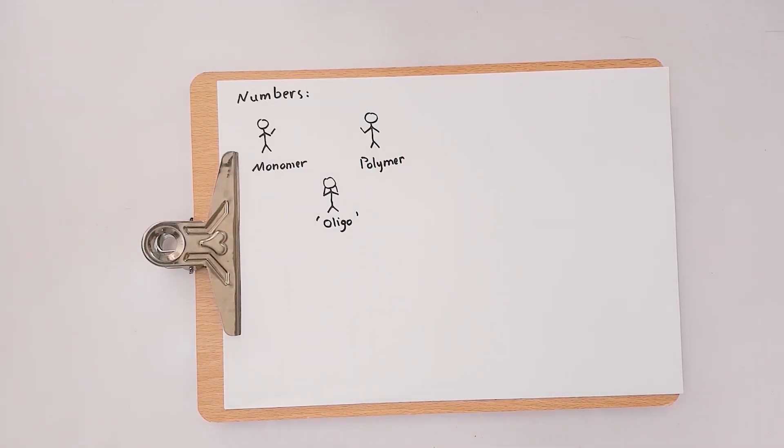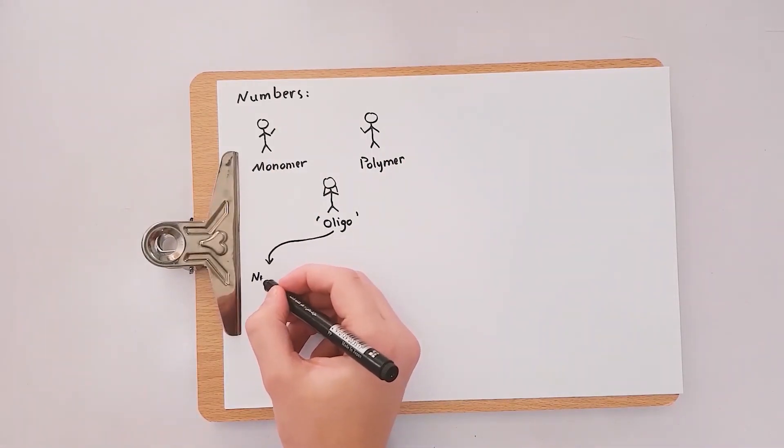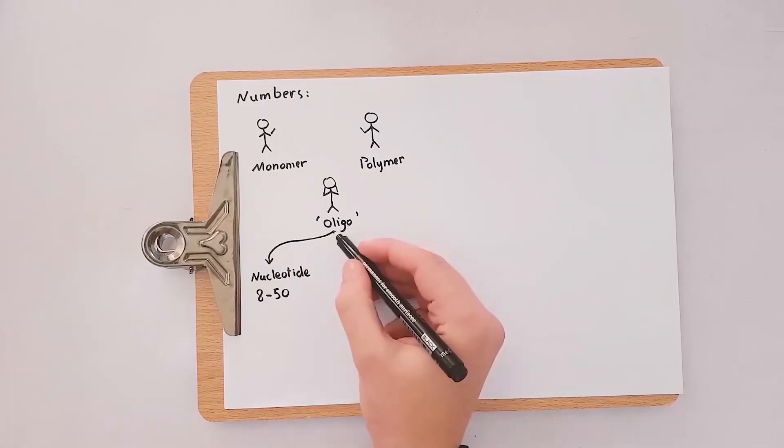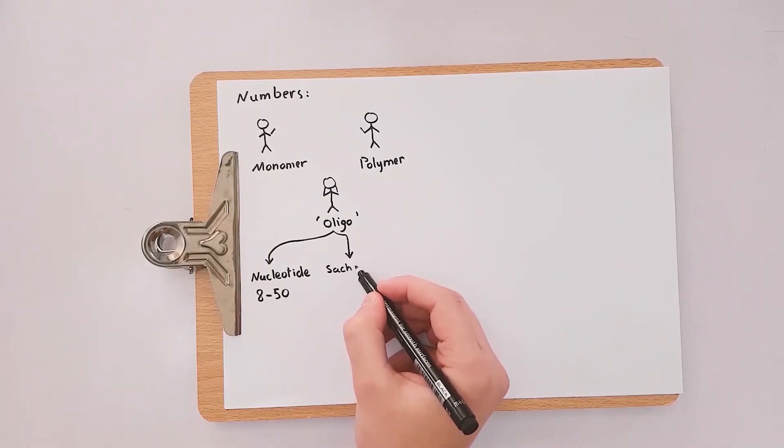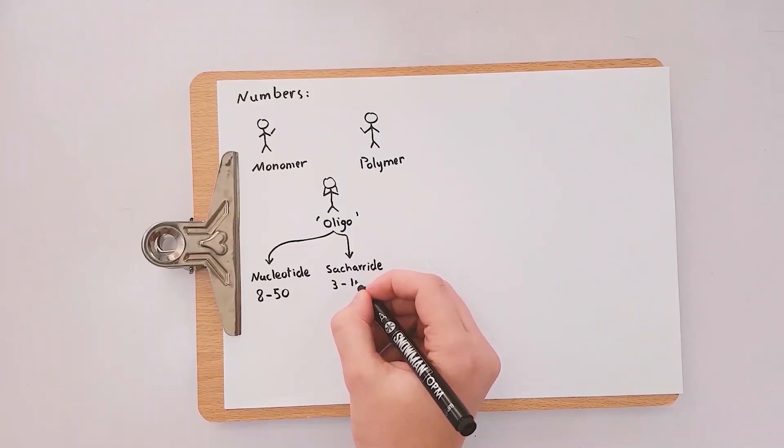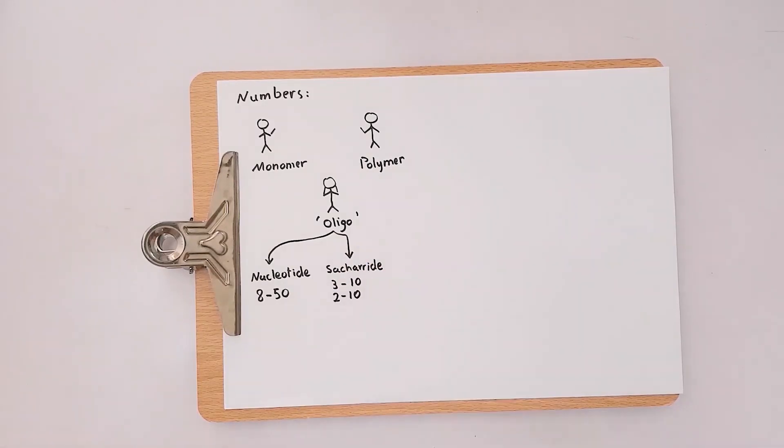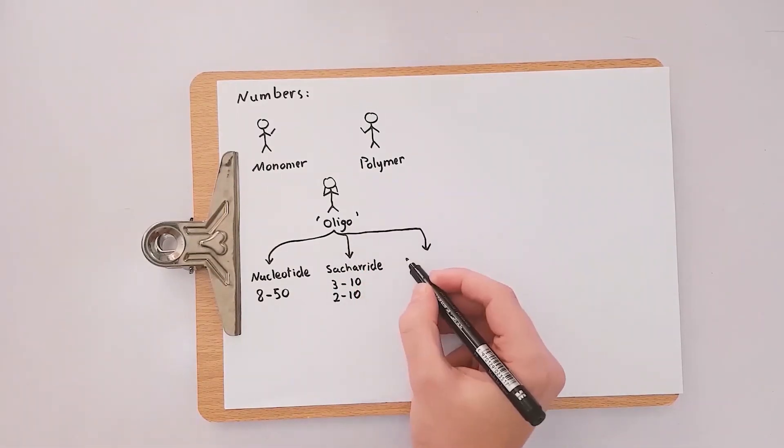The oligo has three cases. In nucleotides it ranges from 8 to 50 units. In saccharides it ranges from 3 to 10, and in other references from 2 to 10 units. In peptides its chain is shorter than 20 amino acids.